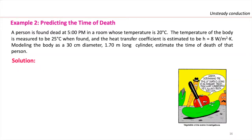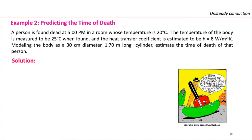Let's recall the formulations. In order to solve this problem, we need to predict the time of death. A person was found dead at 5 p.m. in a room whose temperature is 20°C. The temperature of the body is measured to be 25°C when found, and the heat transfer coefficient is estimated to be 8 W/m²K. Modeling the body as a 30 cm diameter, 1.70 m long cylinder, estimate the time of death.